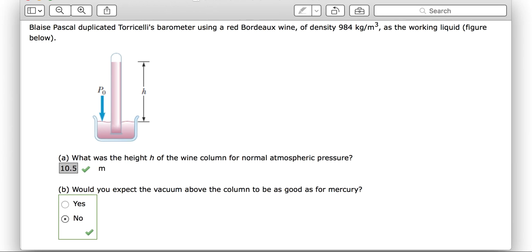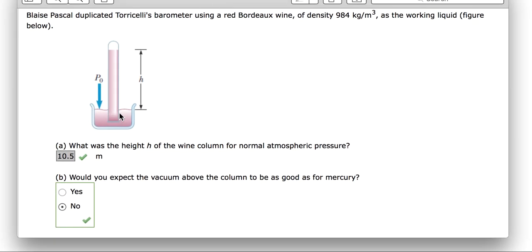We need to use this equation: pressure equals atmospheric pressure plus gravity times height times density of the liquid. P = P₀ + ρgh.